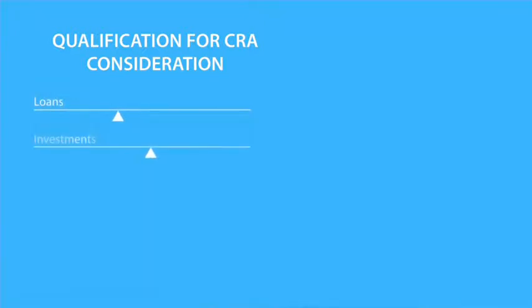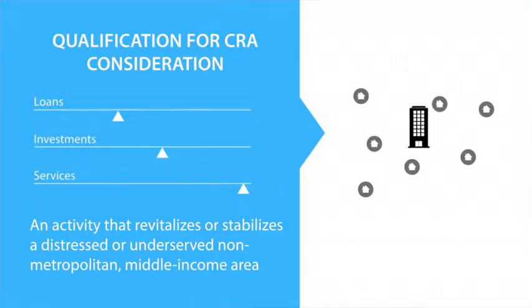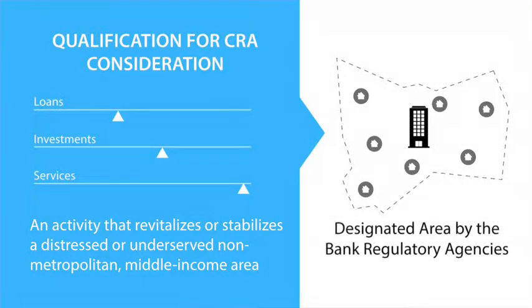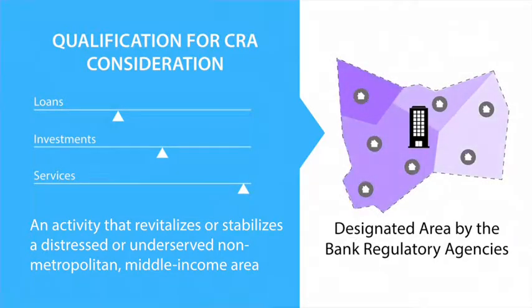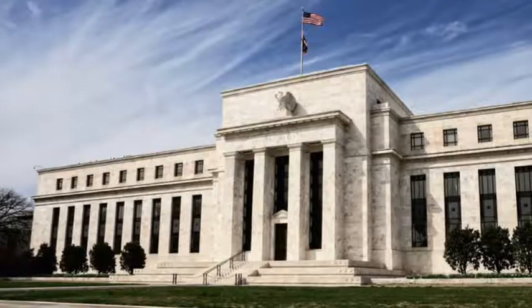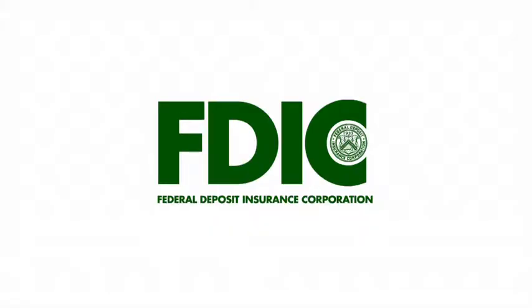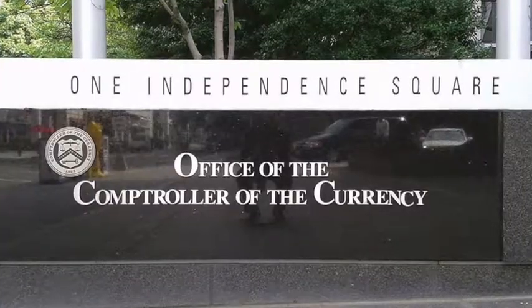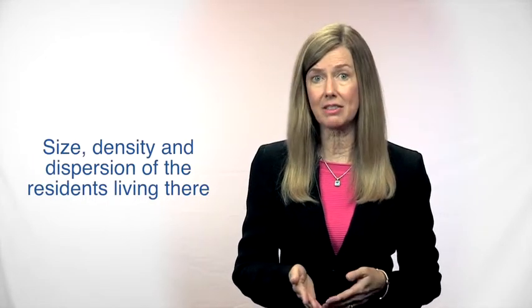For a loan, investment, or service to qualify for CRA consideration as an activity that revitalizes or stabilizes a distressed or underserved, non-metropolitan, middle-income area, the activity must be located in an area designated by the bank regulatory agencies. Each year, the Federal Reserve, the Federal Deposit Insurance Corporation, and the Office of the Comptroller of the Currency designate such areas by carefully considering local poverty and unemployment rates, population loss, and the size, density, and dispersion of the residents living there.